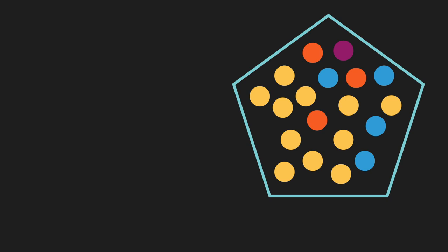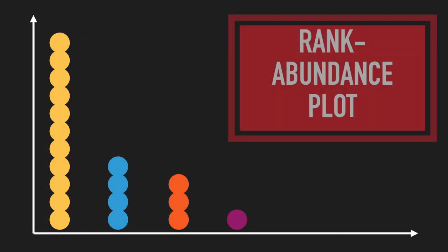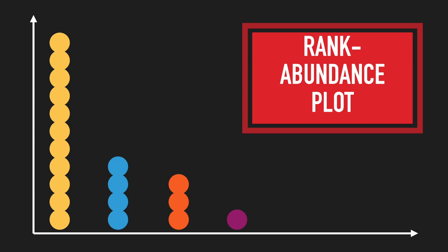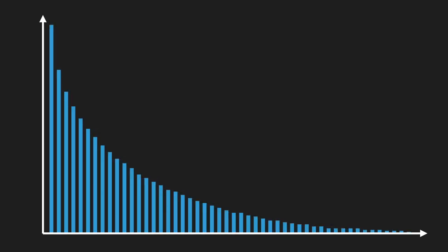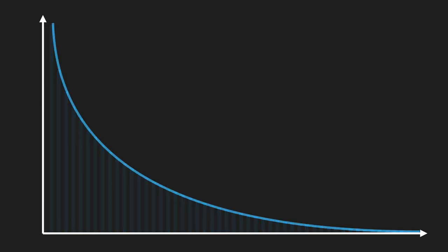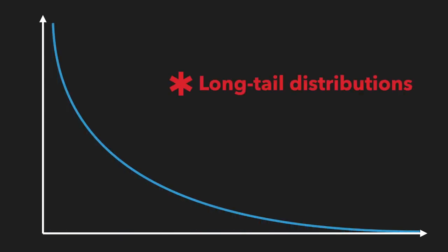There are several ways to visualize this distribution, but a very common one is the rank abundance plot. In a rank abundance plot, you sort the species from most abundant to least abundant on the horizontal axis and represent the abundances of each species on the vertical axis. Importantly, as we increase the sampling effort, we might be able to capture more species, and as we see more species, these plots tend to follow similar patterns that typically tend towards long-tail distributions. In fact, this is such a universal observation in natural communities that the tendency towards long-tail distributions is sometimes called a law of ecology — a rare distinction in the field.